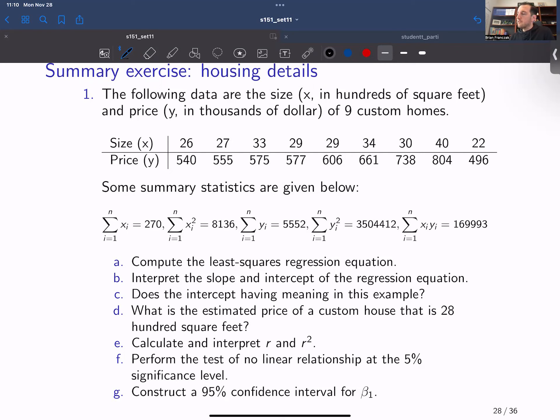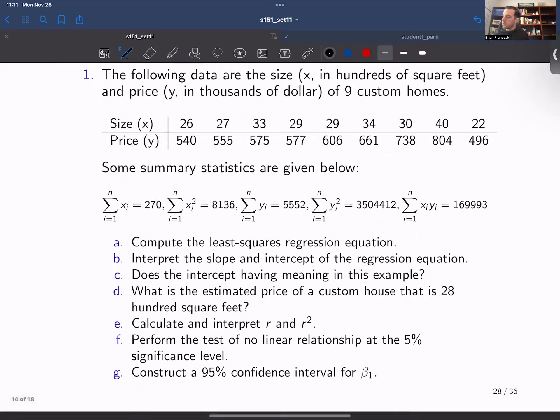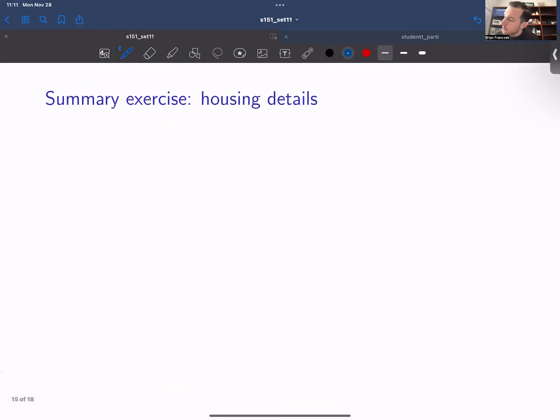We have for this data set the following sets of summary statistics. So we have the sum of xi, the sum of xi squared, the sum of yi, the sum of yi squared, and the sum of x times y. Part A, we want to compute the least squares regression equation. So this is our least squares regression equation, yi hat is equal to b0 plus b1 xi.